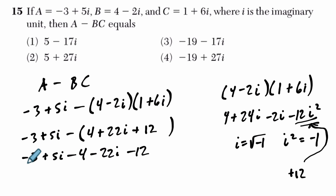And then we look through and see what happens. We get negative 3 minus 4, which is negative 7, minus 12, which is negative 19. And then we have plus 5i minus 22, which is negative 17i.